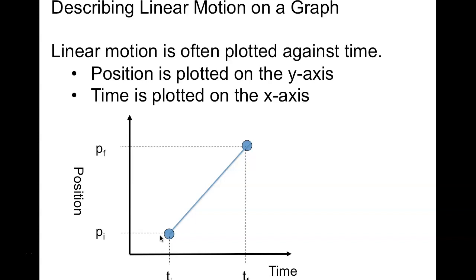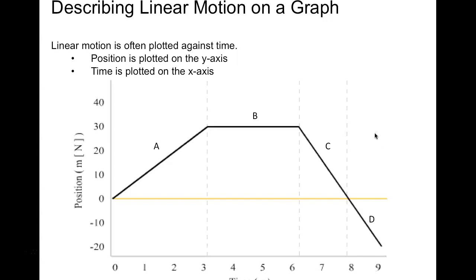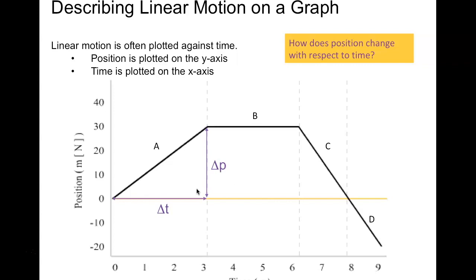To describe linear motion on a graph, position is on the Y axis and time on the X axis. This describes change in position over time. Starting at initial time T_i and position P_i, position increases in a positive value over time. A longer time period gives greater variance in the change in position. How position changes with respect to time — that is our velocity.